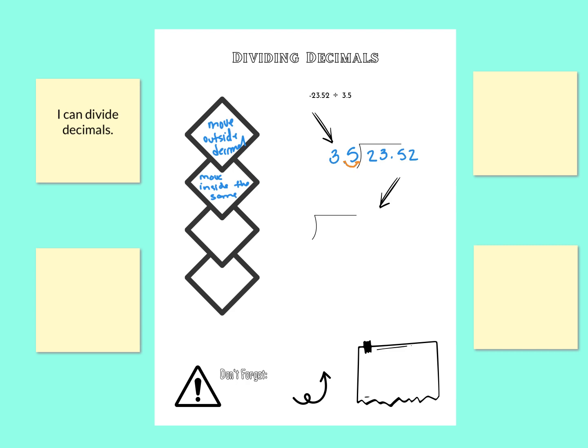Because we moved the outside decimal once, then I want to move the inside decimal once. It's not important that this one in here is at the end. It doesn't have to be a whole number. Just the outside one, the 35, needs to be a whole number. So we moved our outside decimal, we moved our inside decimal. Now we're going to bring the decimal straight up.